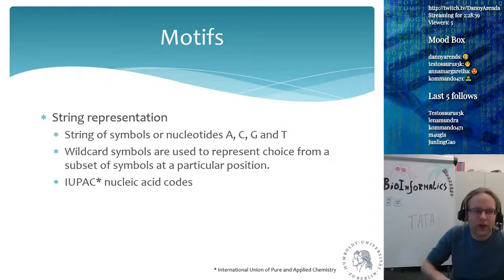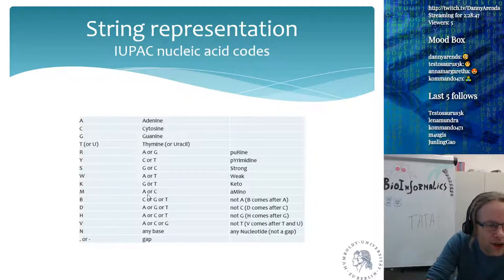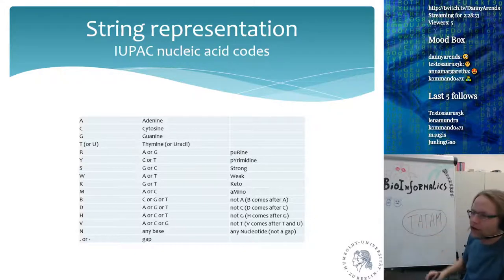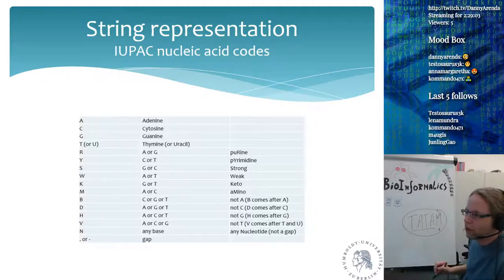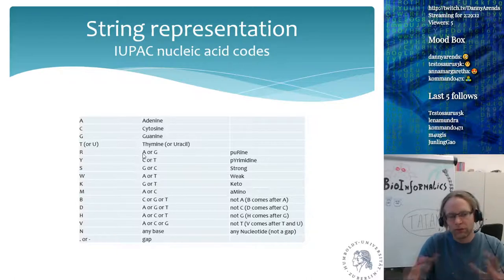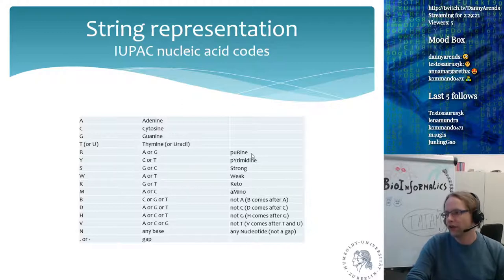You make that position a wildcard — A or C — which in IUPAC coding is called 'M'. So the search string for the TATA box always has TATA guaranteed, but at the last position both A and C match. You use IUPAC coding where all different base pair combinations have a letter, for example R means A or G (both purines), Y means C or T (both pyrimidines).